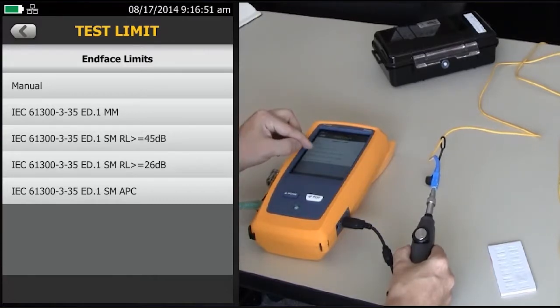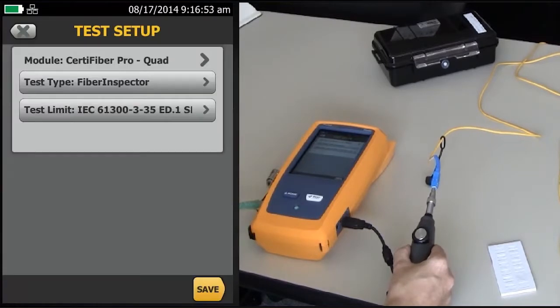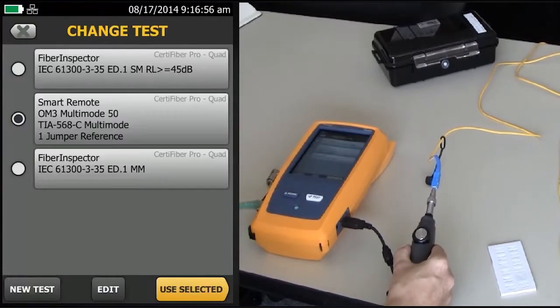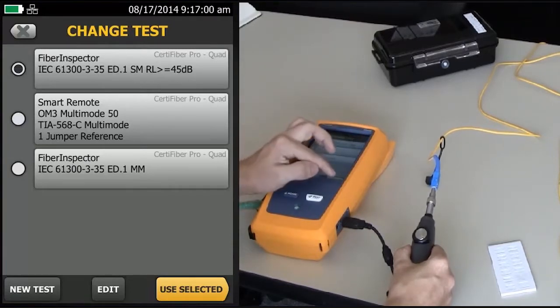So let's go ahead and select the factory polished one here. I'll save it. Here's my new test at the top here. So I'm going to highlight it, Use Selected.